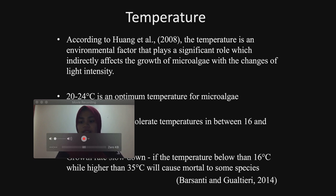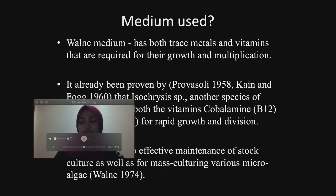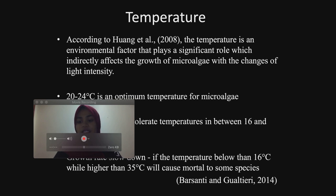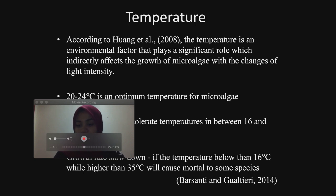These temperatures are still within a suitable range, since Tetraselmis species can tolerate temperatures between 16 and 27 degrees Celsius, with 20 to 24 degrees Celsius as the optimum temperature for microalgae, although this varies with the medium composition. Growth rate will slow down if temperature is below 16 degrees Celsius, while temperatures higher than 35 degrees Celsius will cause mortality in some species. According to Barsanti and Gualtieri 2014, over a range of moderate temperatures and low to medium light intensity, the rate of photosynthesis increases with light intensity and is relatively independent of temperature. High temperature will prevent algae growth and lower the biomass.